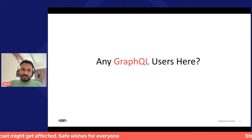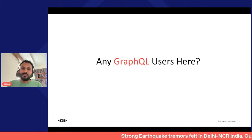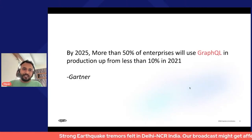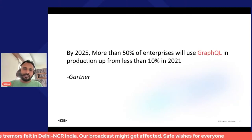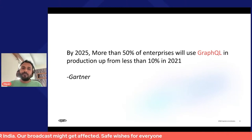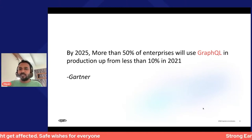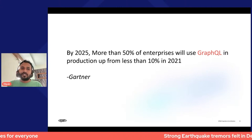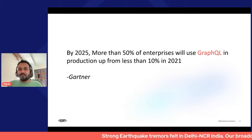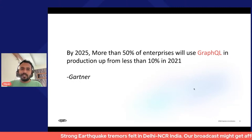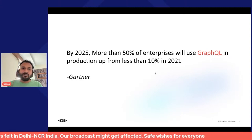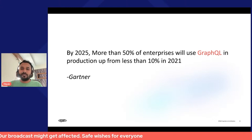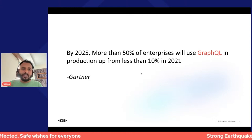I assume that most of us are already aware of GraphQL and GraphQL clients. Gartner did a survey on GraphQL usage and figured out that by 2025 more than 50% of enterprises are going to be using GraphQL in production. In 2021 only 10% of enterprises were using GraphQL in production.